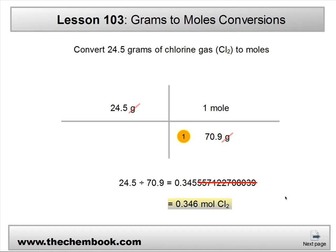So let's look at another problem where we're asked to convert 24.5 grams of chlorine gas to moles. We start with 24.5 grams, and then we know right away that we're going to put the molar mass of chlorine down on the bottom. And then we do our math: 24.5 divided by 70.9.